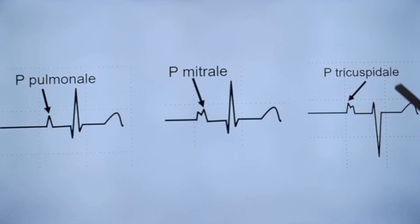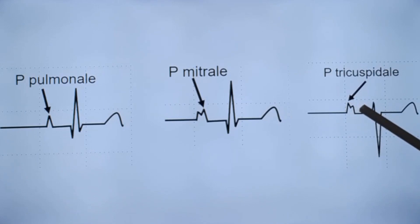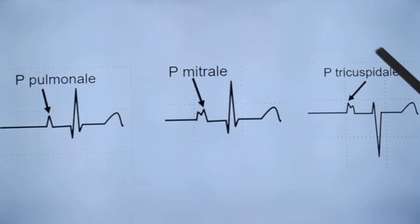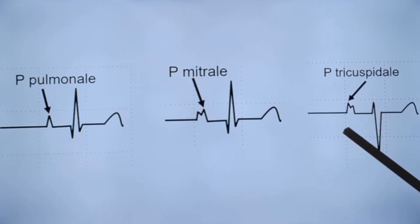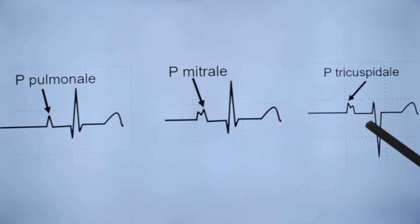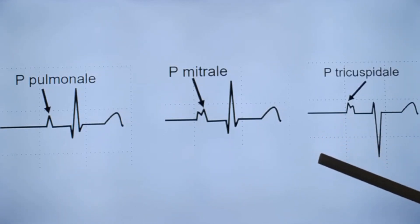P tricuspidale is evidence of biatrial enlargement but is predominantly right atrial, as in tricuspid atresia — that is why the initial component is taller than the second component, making it a mirror image of P mitral. This is a rare finding; many clinicians are unlikely to ever see P tricuspidale on an ECG, so it is mainly of academic interest.